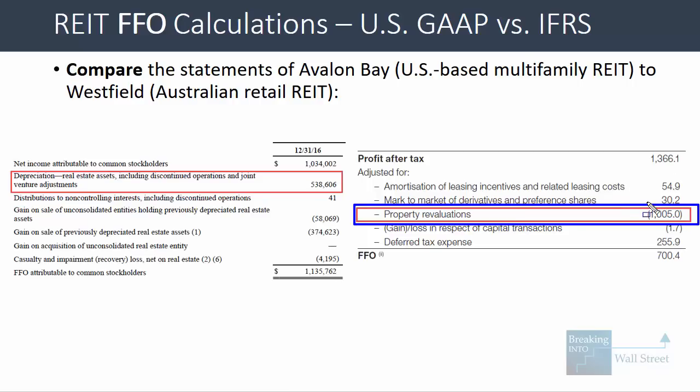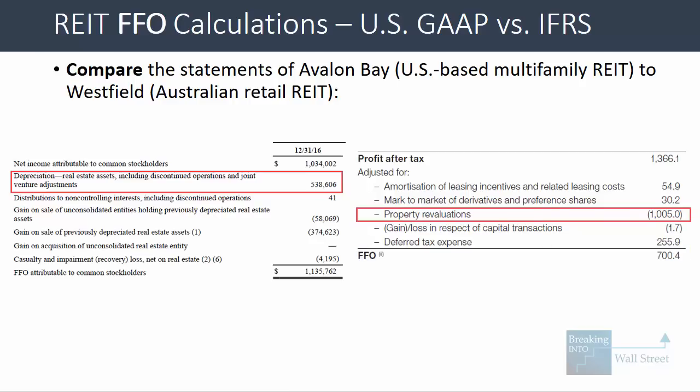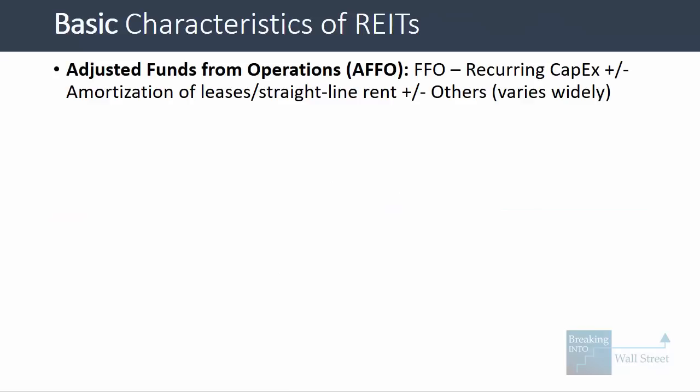There are other metrics as well, such as adjusted funds from operations, which starts with FFO and subtracts recurring maintenance capex and makes adjustments for lease straight-lining and other items. But the most important metric is FFO, or variants such as EPRA earnings for European REITs.